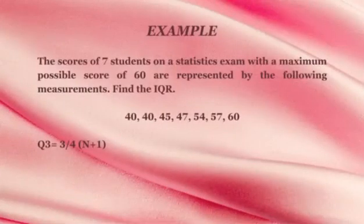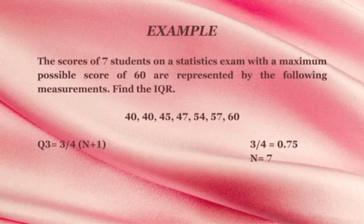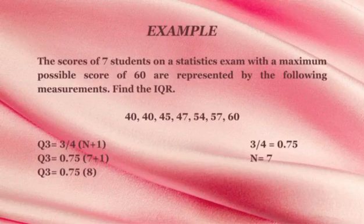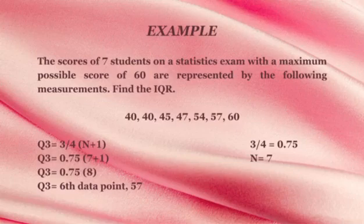Next, we need to find the Q3. The formula is 3/4 times n plus 1. 3/4 is equal to 0.75 and n is equal to 7. Again, we substitute it in the formula. Q3 is equal to 0.75 times 7 plus 1. 7 plus 1 is 8. Therefore, Q3 is equal to 0.75 times 8, and we get the answer. Q3 is equal to the sixth data point or 57.